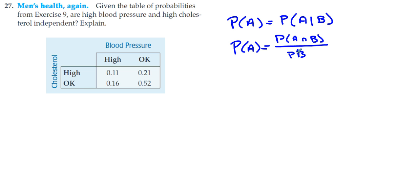Now when you have your two-way table, it actually makes it very easy. And you get to pick. Let's say we'll compare the probability of high cholesterol to the probability of high cholesterol given high blood pressure.